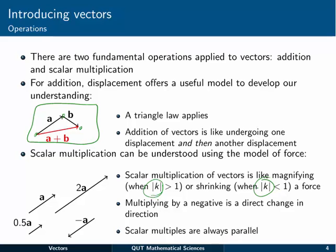Multiplying by a negative value is simply a direct change in direction. Scalar multiples of vectors are always parallel, and that can be quite useful, so it's something useful to keep in mind.